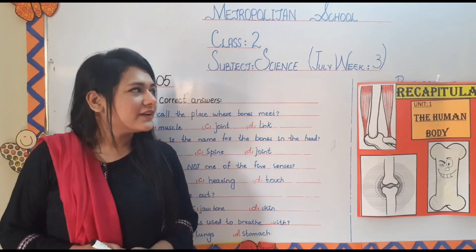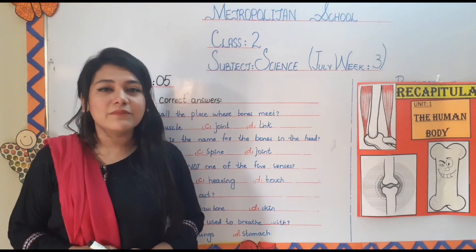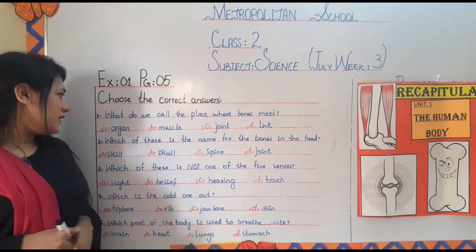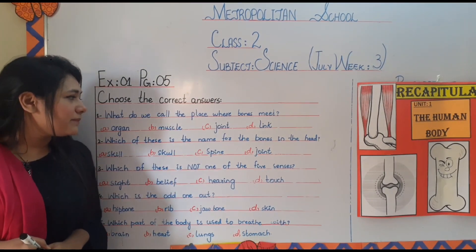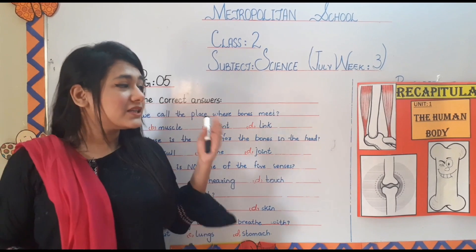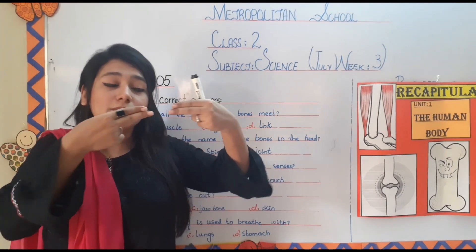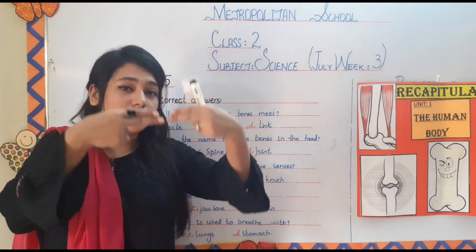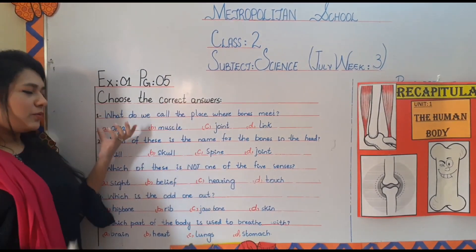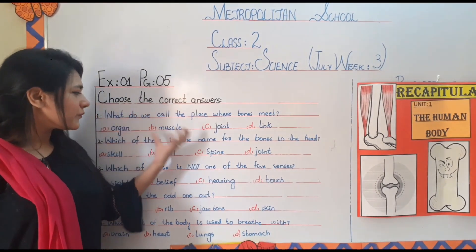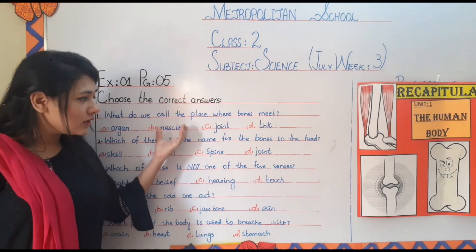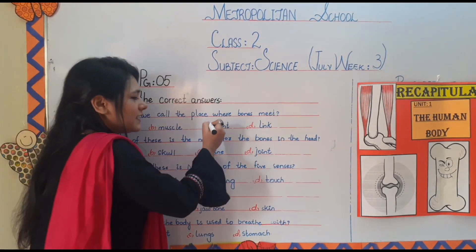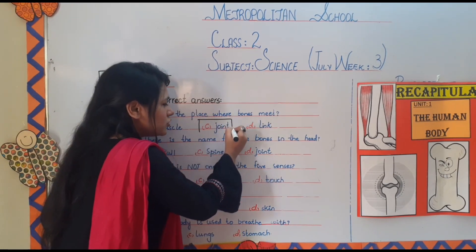We are done with the recapitulation, now it's time to start today's lesson. We are going to start with 'choose the correct answer.' Number one: what do we call the place where two bones meet? The answer is joint.